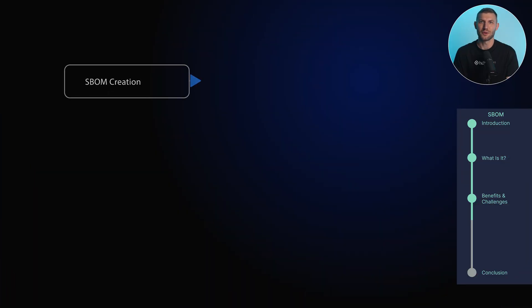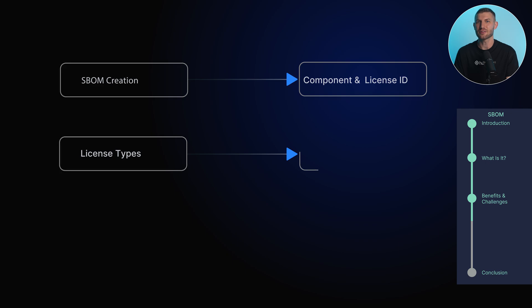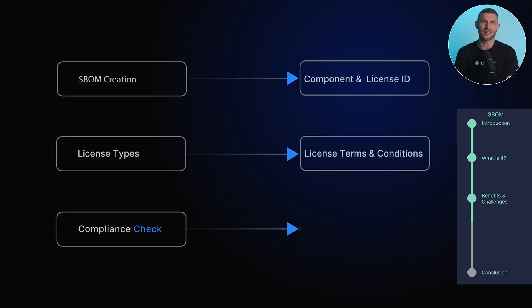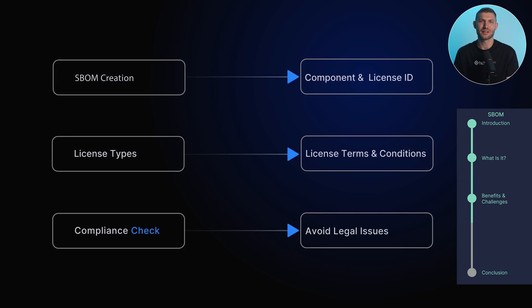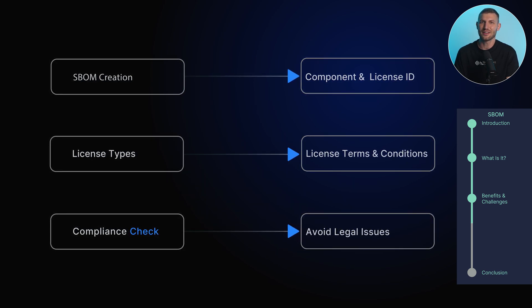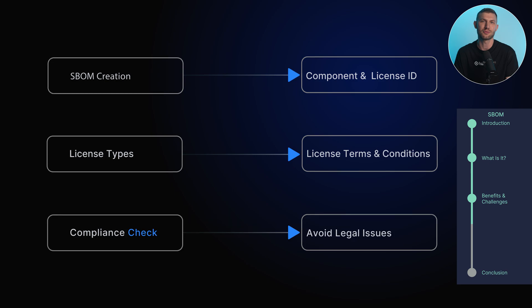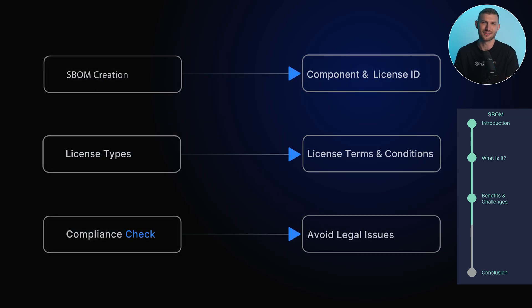Compliance with licensing requirements is also facilitated by an SBOM. Open source components often come with specific licensing terms, and an SBOM provides clear visibility into the licenses associated with each component. This information helps organizations understand and adhere to obligations and restrictions imposed by different licenses, avoiding legal issues and potential violations.